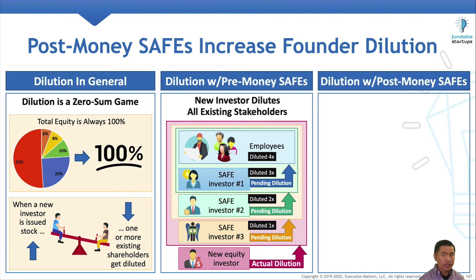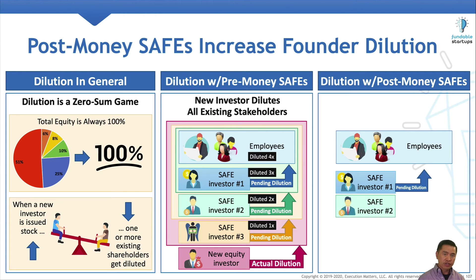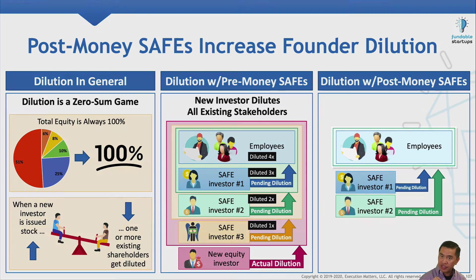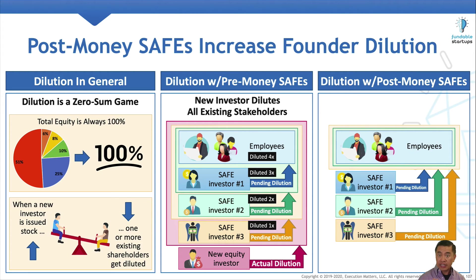Now let's look at how this works with a post-money safe and the exact same funding scenario. Before any funds are raised, the employees own all of the stock in the company, just like before. The founders close their first safe, which results in the impending dilution of the employees. When the founders close their second safe, this results in the impending dilution of, again, just the employees — unlike the scenario with the pre-money safe, safe investor number one does not suffer any dilution as a result of safe number two. When the founders close their third safe, this results in the impending dilution of, again, just the employees. Safe investors number one and number two do not suffer any dilution.